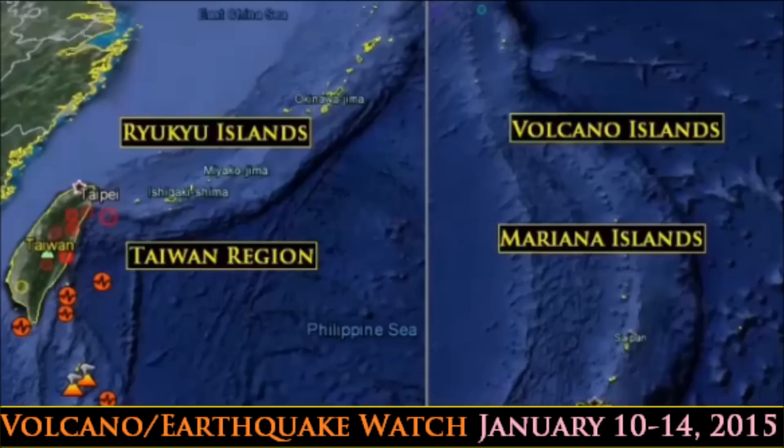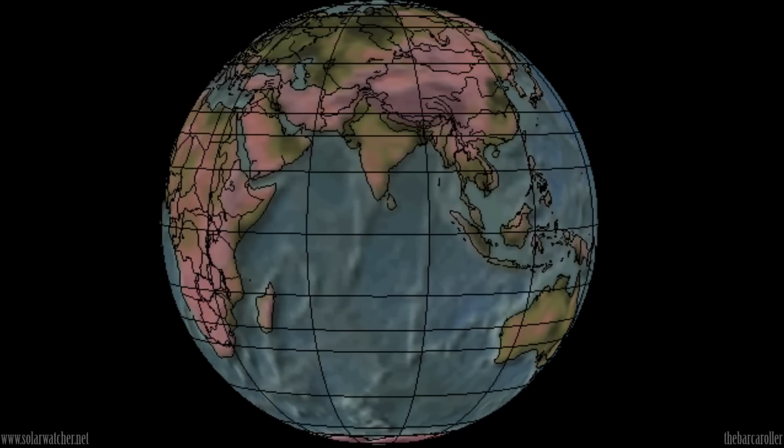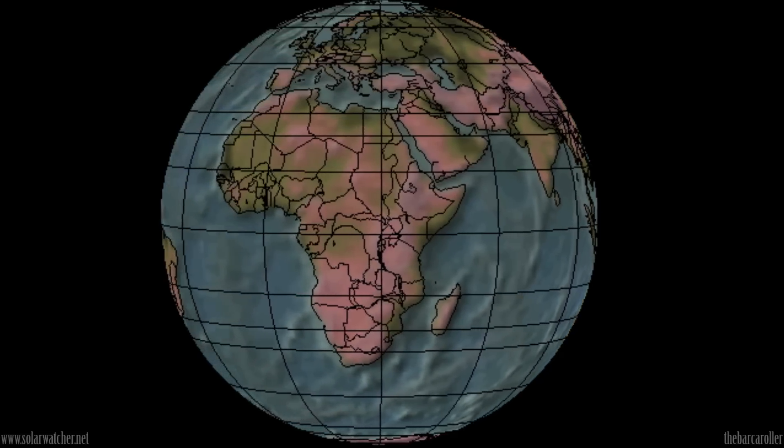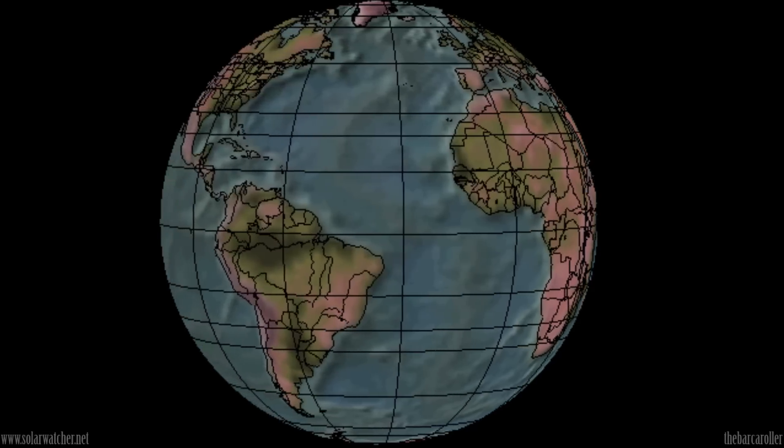Greetings. This is a volcano and earthquake watch for the 10th through to the 14th of January 2015. The significant coronal hole formation will become geo-effective in the coming days and with it a foreshadowing potential for a 6.8 magnitude earthquake for the Northern Hemisphere during this watch.